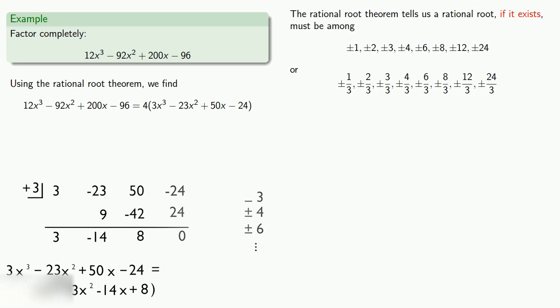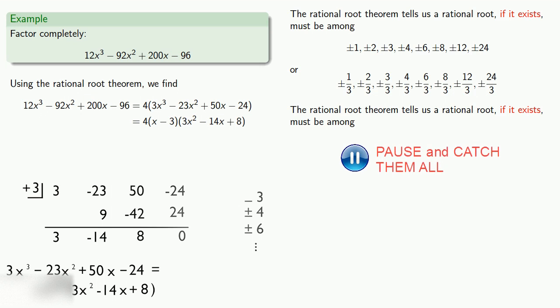Equals means replaceable. So where we had this original dividend, we can replace it with the factored form. And now we have a quadratic polynomial. We could factor this using the quadratic formula to find the roots, but just for practice, let's use our rational root theorem again. The rational root theorem tells us that a rational root, if it exists, must be among... And again, we have a very long list of possibilities.